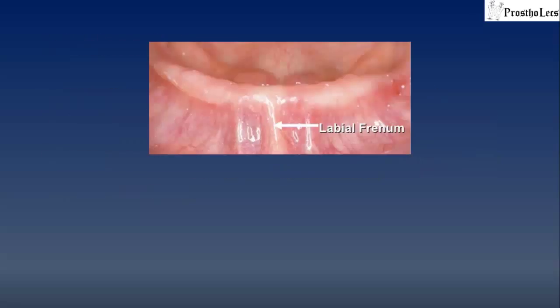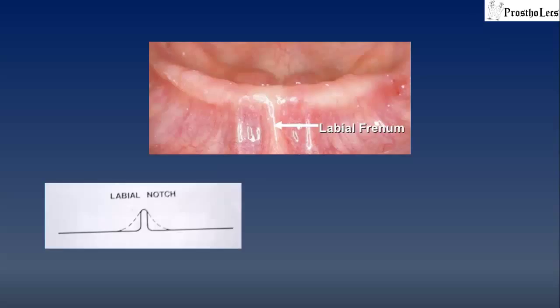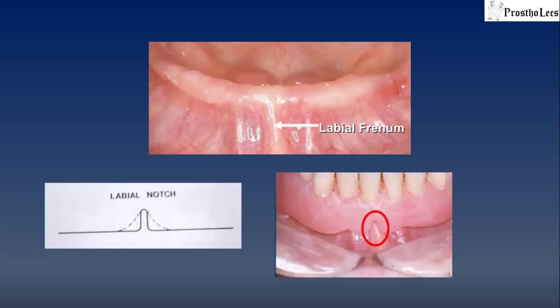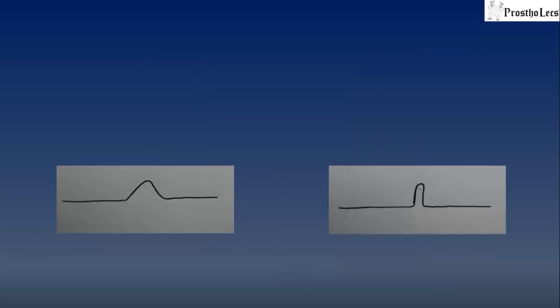In this picture we see the labial frenum. The notch made in the denture for the labial frenum should be narrow and U-shaped. The notch should not be wide and V-shaped — it should be narrow and U-shaped.